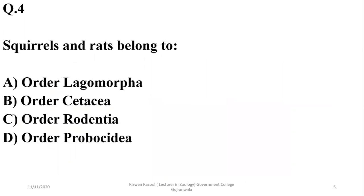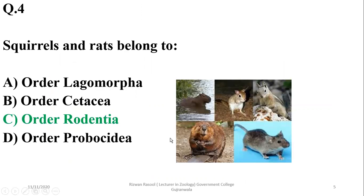Question 4: Squirrels and rats belong to which order of mammals? They belong to order Rodentia. Rabbits belong to order Lagomorpha, diving mammals belong to Cetacea, and elephants belong to order Proboscidea. The right option is C.